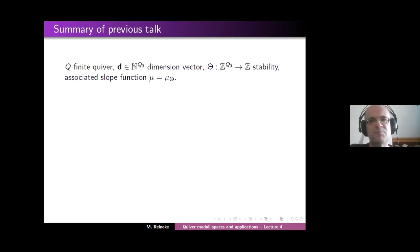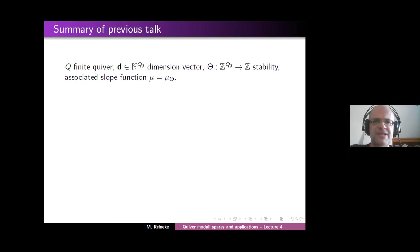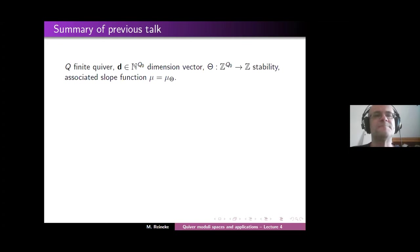To briefly recall it: semi-stability means the slope of any proper non-zero sub-representation is less than or equal to the slope of the representation itself.